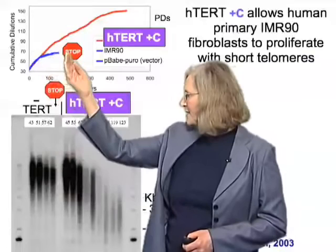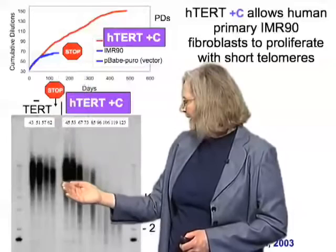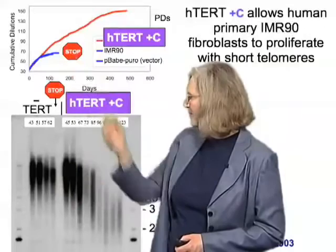Now let's look at the telomeres. In the control cells, we find that they're gradually becoming somewhat shorter, and then at that point they've pretty much ceased to divide. So the telomeres on average are about this long, and the cells have picked up the signal — they've said the telomere length is shorter here than here, and they've said we're not going to divide any further.